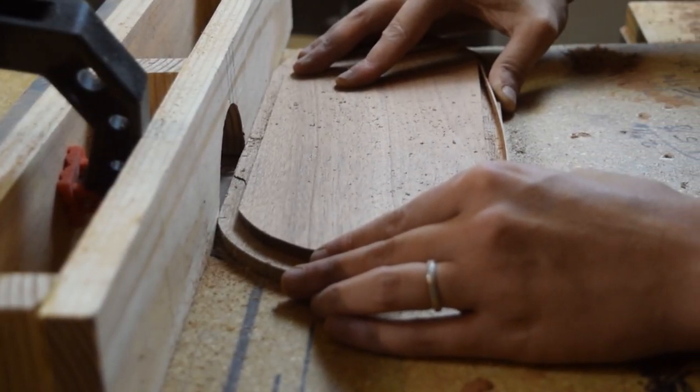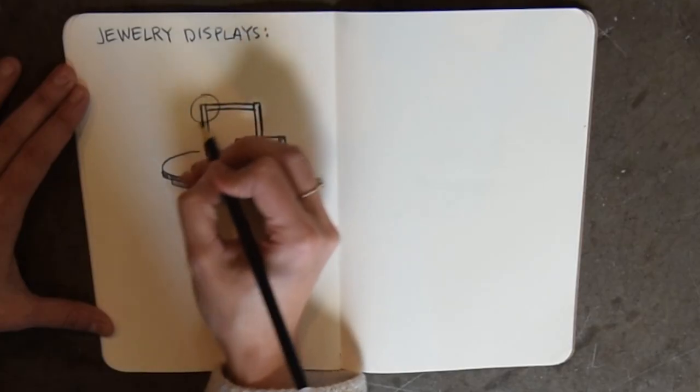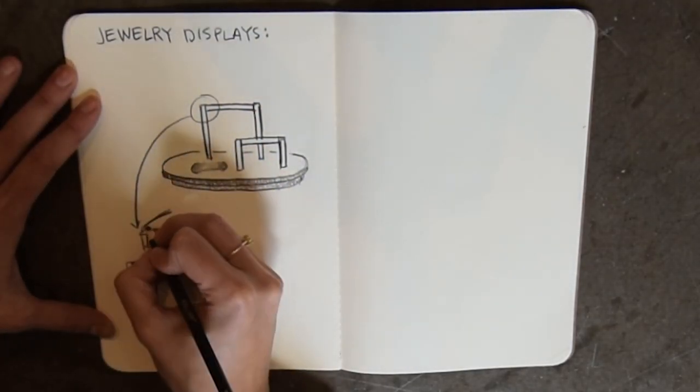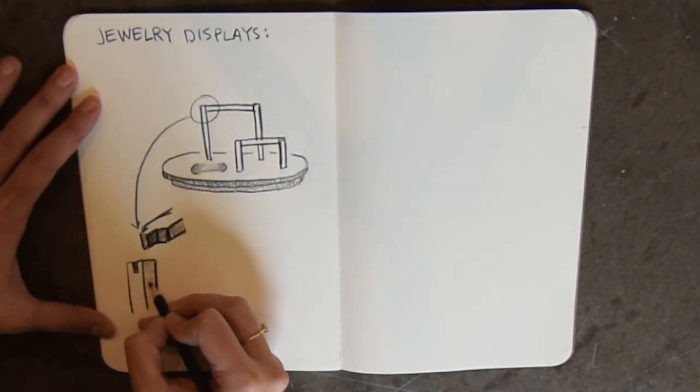I didn't love how that turned out, so let's switch to the display racks while I mull over how to redesign. The display racks used a bridle joint for the stretcher and tenon mortises to connect the rack to the base.